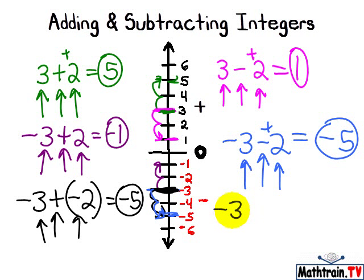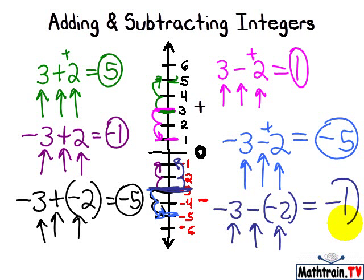And negative 3 minus a negative 2. We start at negative 3, and we're going to subtract 2 negatives. Subtracting 2 negatives, we're not adding 2 negatives, we're getting rid of 2 negatives. So we go 1, 2, and we end up at negative 1. Thank you.